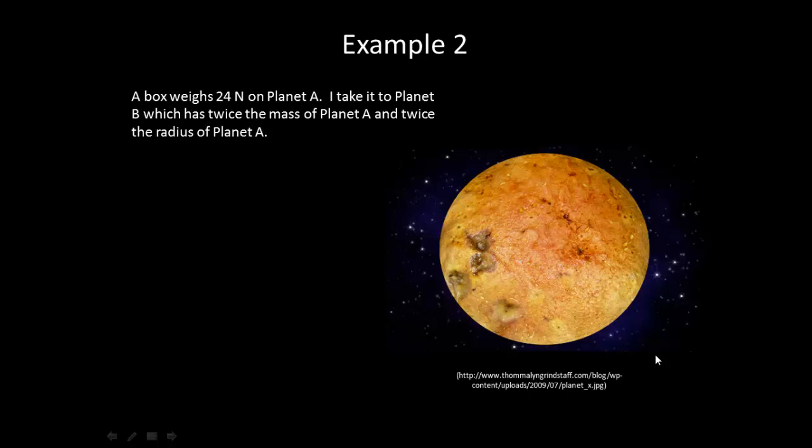Let's do one more example problem. A box weighs 24 newtons on planet A. I take it to planet B which has twice the mass of planet A and twice the radius of planet A. How much does the box weigh on planet B? Pause the video now and try to solve this.